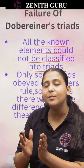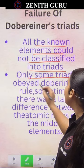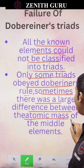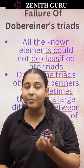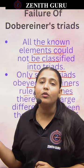What were the triads? They had created groups of three elements. Only some triads obey Döbereiner's rules, and sometimes there was a large difference between the atomic mass of the middle elements. There were some elements with similar properties but they did not follow the triads.